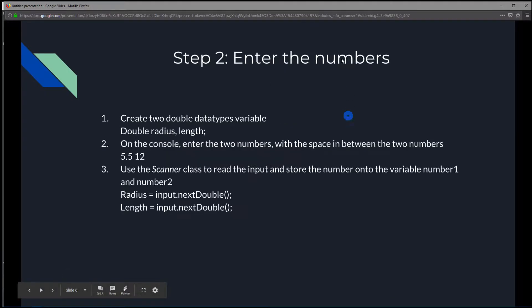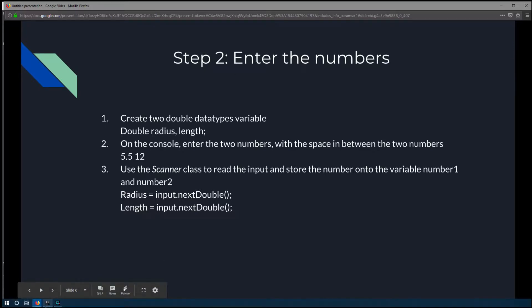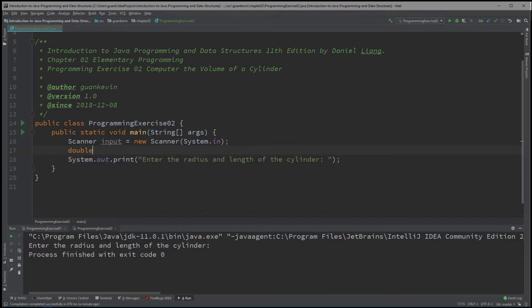Now we're finished with step one, so let's go to step two: enter the numbers. We're going to create two double data type variables called radius and length. When we enter the numbers 5.5 and 12, we want to store them somewhere. If we just enter them and don't store them, Java is going to forget and we won't be able to use those numbers. So we declare: double radius, length.